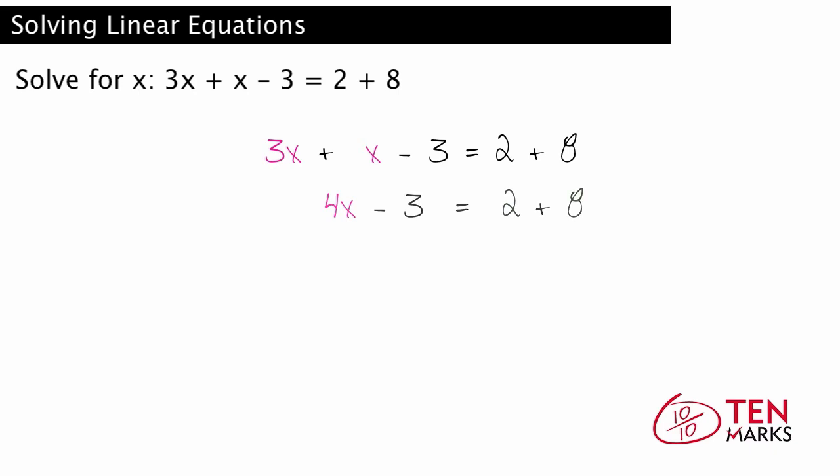Similarly, 2 and 8, which are constants, are like terms. Since 2 plus 8 is 10, we now have 4x minus 3 equals 10. Now solve.